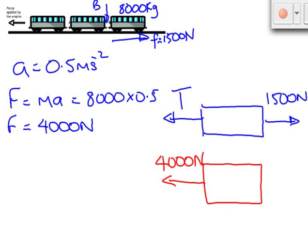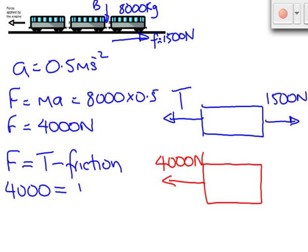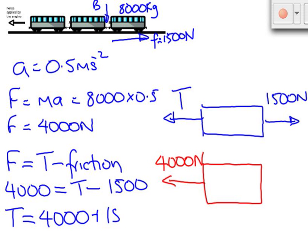Let's write that in an equation then. Our unbalanced force is equal to the tension in link B minus the friction force on the carriage. We can rearrange this now to get an expression for T. T is simply the unbalanced force plus the frictional force. So when we add those together, we find that the tension in link B comes to 5,500 newtons.